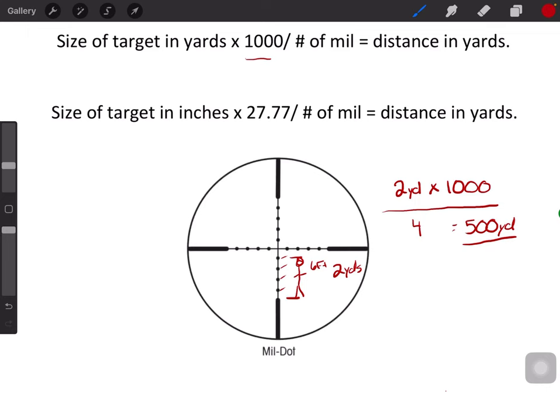That is your distance to the target. Something to keep in mind: this one thousand when you're measuring in yards is a constant.